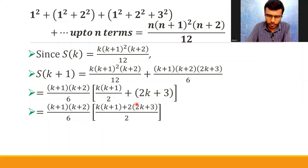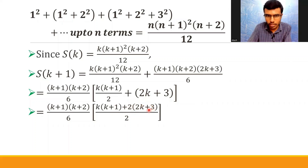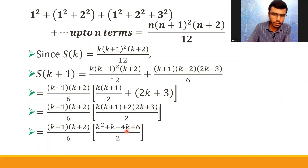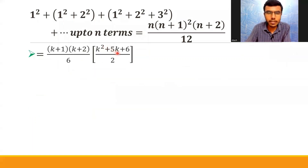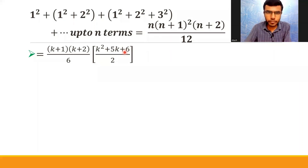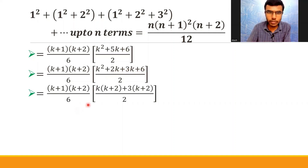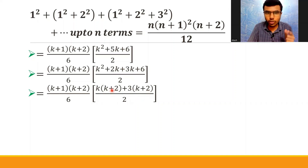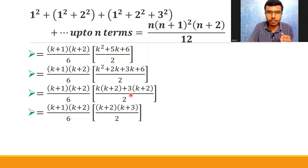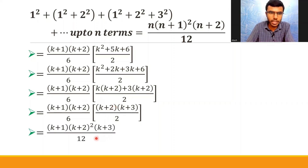Multiplying out: k × k = k², k × 1 = k, 2 × (2k+3) = 4k+6. Adding: k² + k + 4k + 6 = k² + 5k + 6. Now I factorize: write 5k as 2k + 3k. Taking k common from the first two terms and 3 common from the last two gives k(k+2) + 3(k+2). Taking (k+2) common leaves (k+2)(k+3). Multiplying the denominators, k+2 × k+2 = (k+2)². So S(k+1) = (k+1)(k+2)²(k+3)/12.